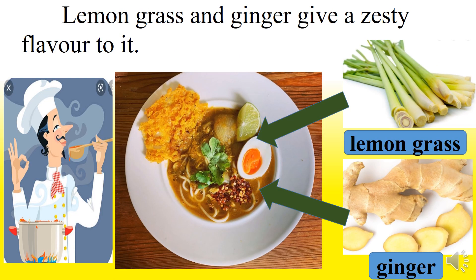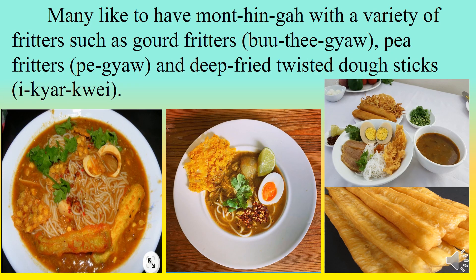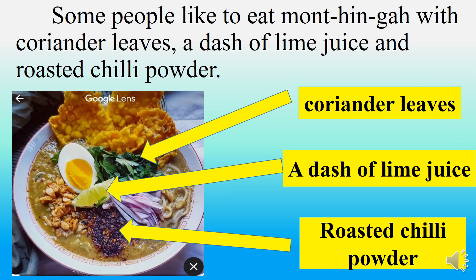Lemongrass and ginger give a tasty flavor to it. Many like to have mohingya with a variety of fritters such as gourd fritters, pea fritters, and deep-fried twisted dough sticks. Some people like to eat mohingya with coriander leaves, a dash of lime juice, and roasted chili powder.